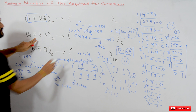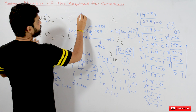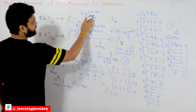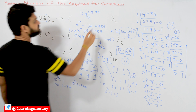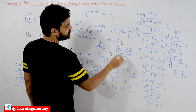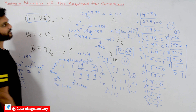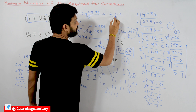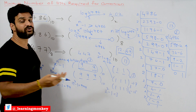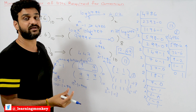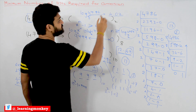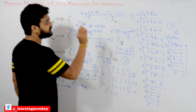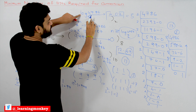Similarly, to convert 4786 into base 8, we find log base 8 of 4786, which is approximately 4.02. Since 4.02 is not sufficient to represent the complete number, we take the ceiling value, which is 5. So the minimum number of bits required to represent 4786 in base 8 is 5.